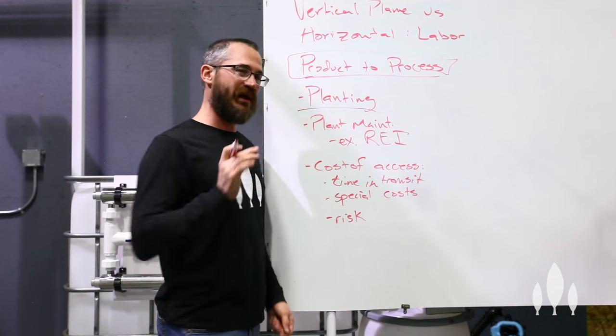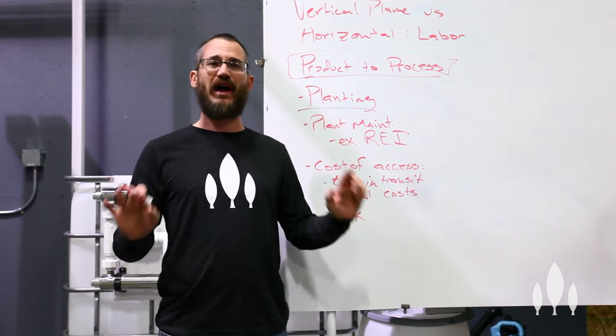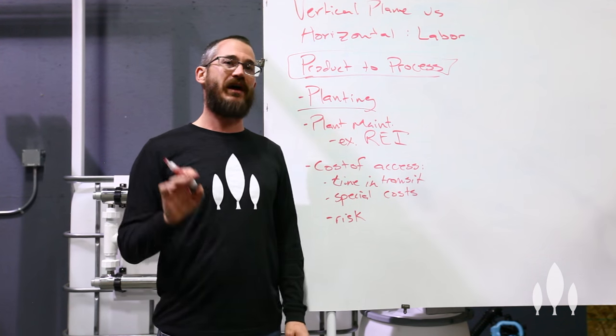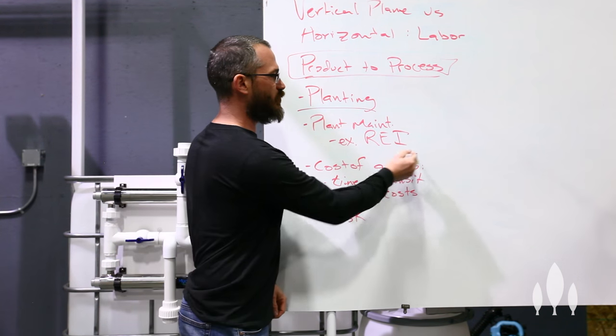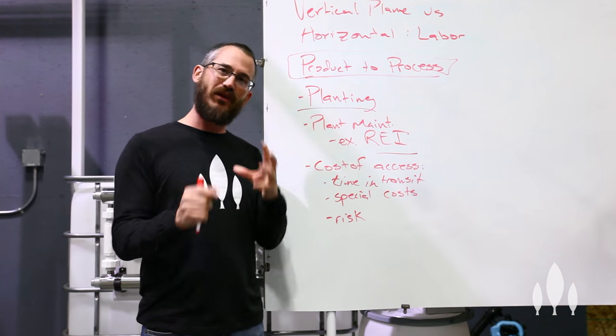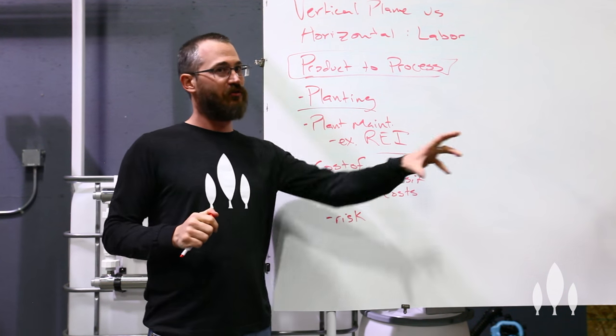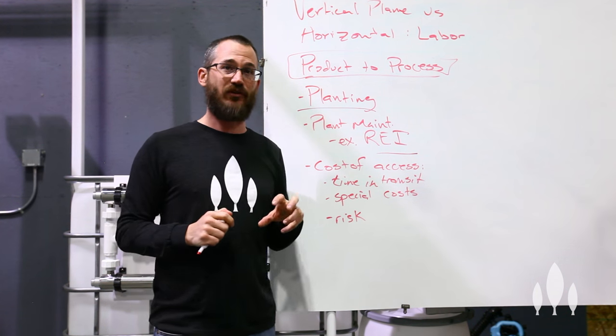The other thing is plant maintenance. So for those of you that are producers, you're familiar, I'm just going to use an example here. There are lots of examples, but the one that comes to mind the fastest and most simply is re-entry interval. Those of you that are growers are familiar with re-entry intervals. It's basically the time limit you place on being able to re-enter a growing environment after you spray.